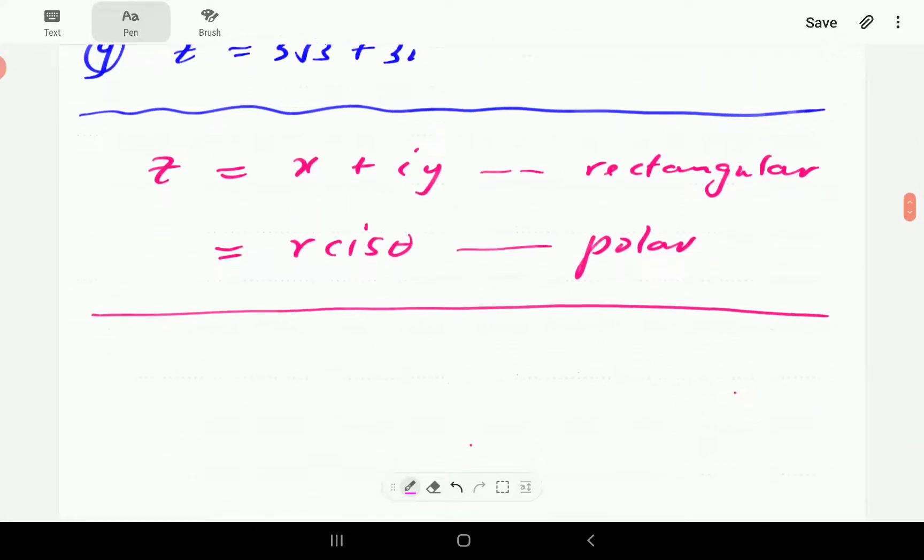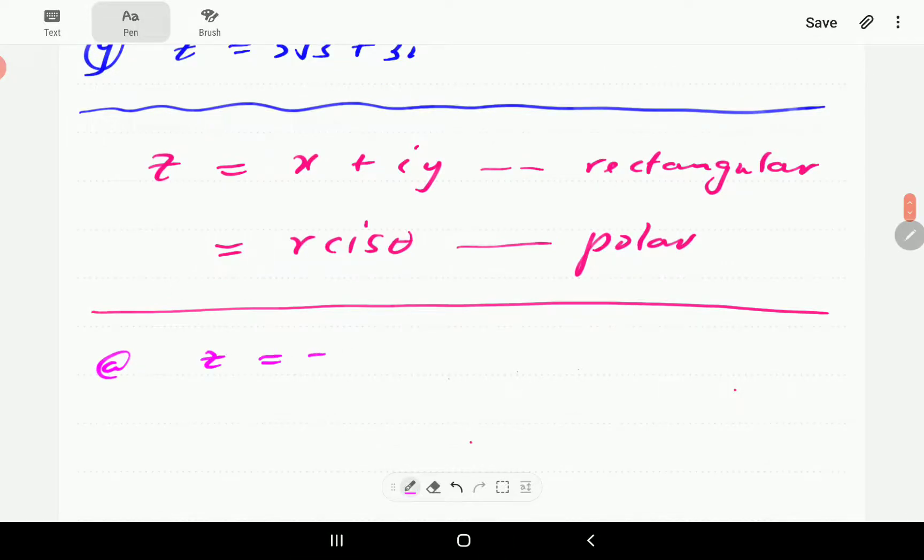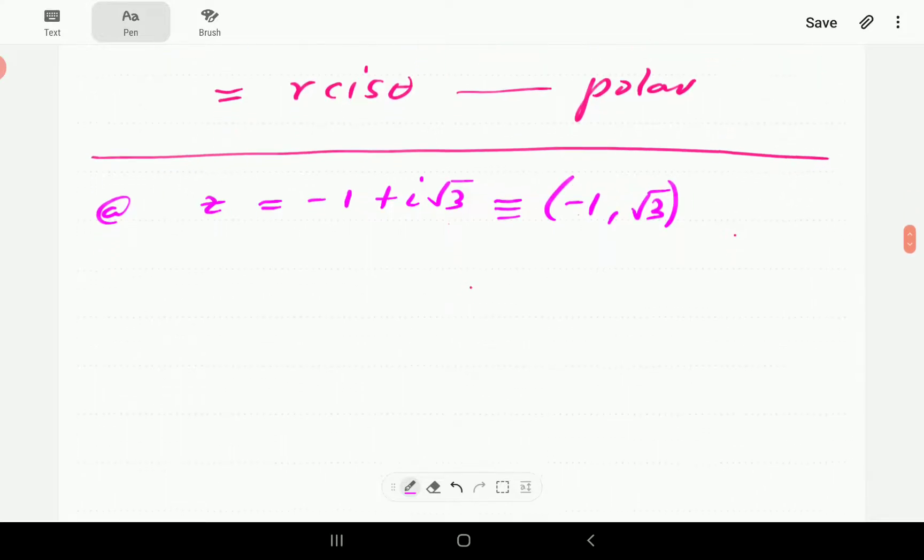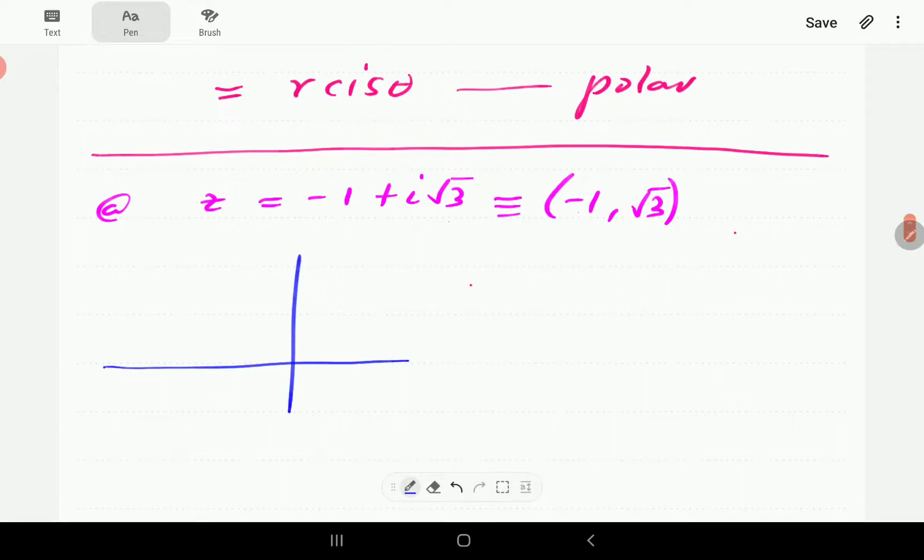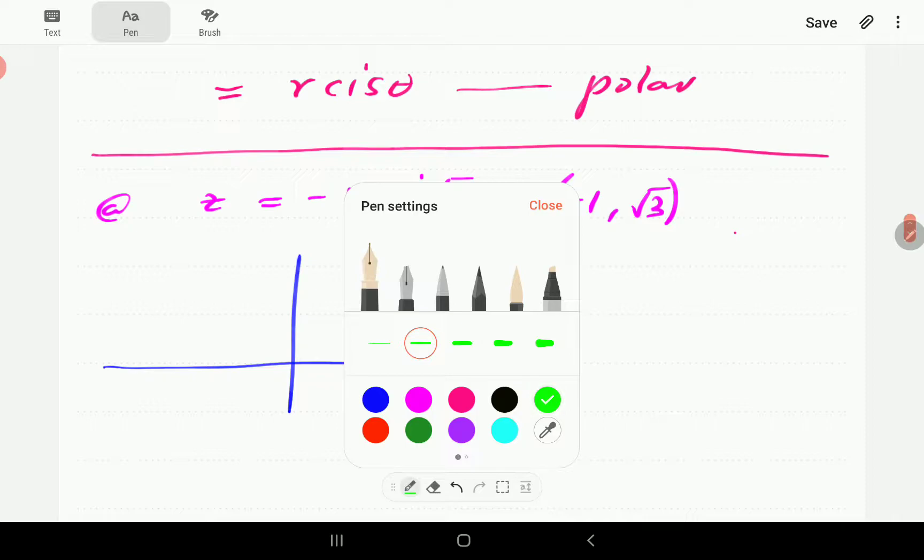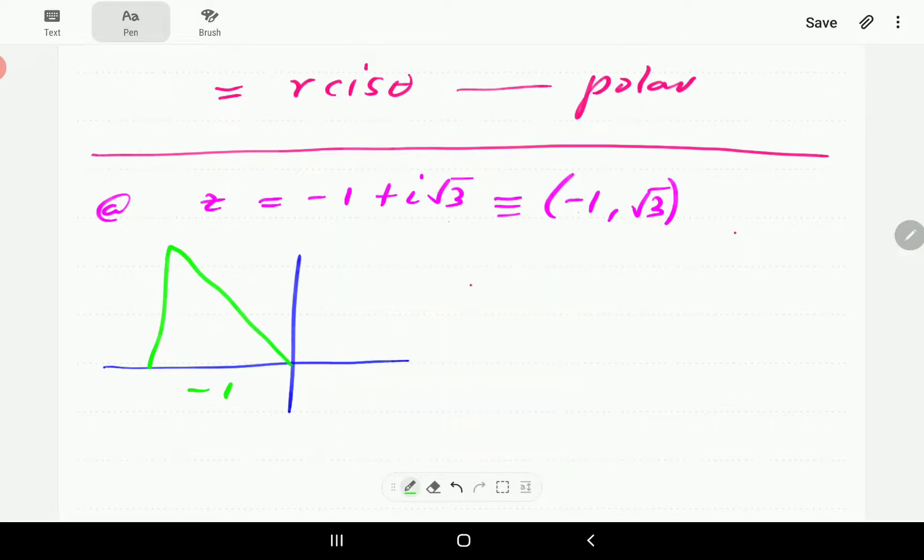So for the first question in A, we have got z equals to negative 1 plus i root 3. The first thing we're going to do here is to write this in coordinate form. The x is negative 1 here, the y is the square root of 3. The y is always the coefficient of the imaginary number i. That means the complex number we have here is located in quadrant number 2. The horizontal distance is minus 1, vertical distance is root 3.